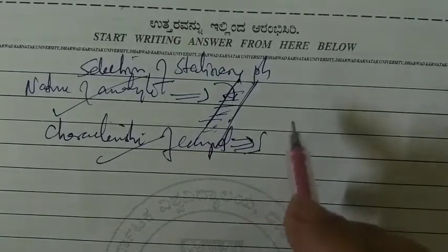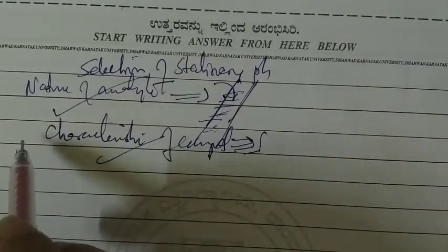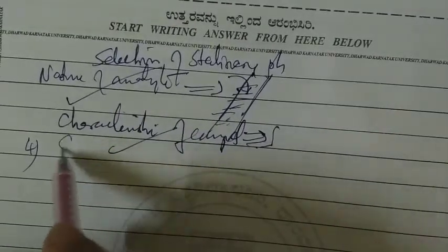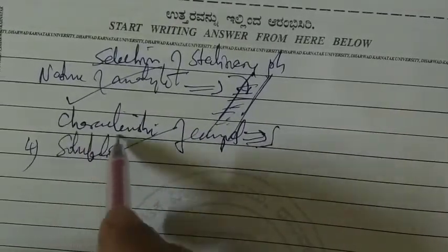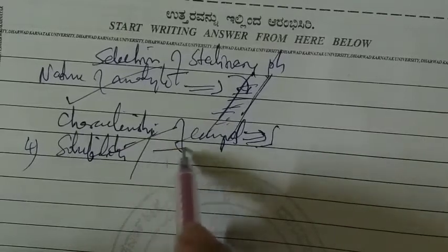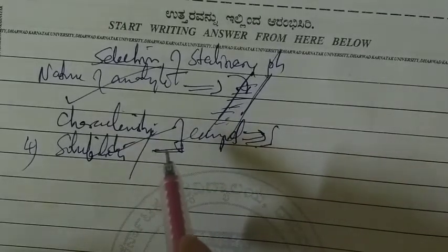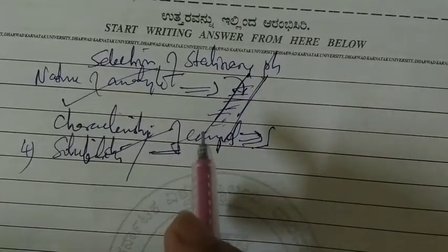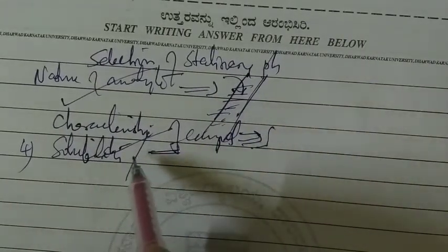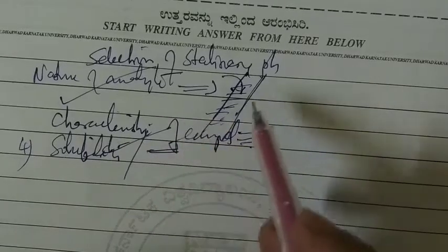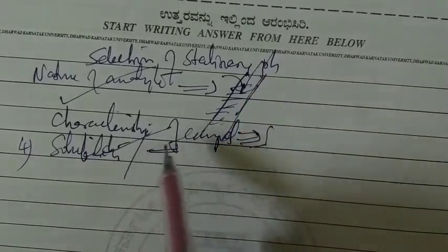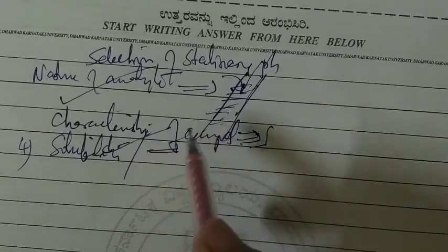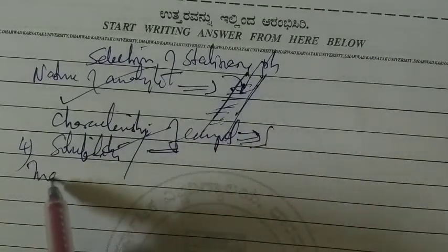The fourth important point is the solubility of the compound or sample. We should know the solubility of the compound or analyte which we are interested to run on the stationary phase. This is also a very important parameter.